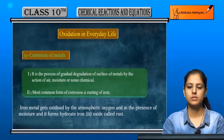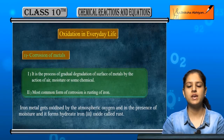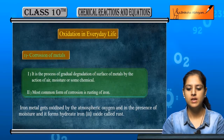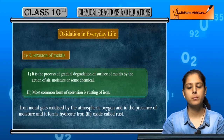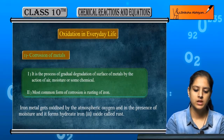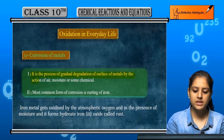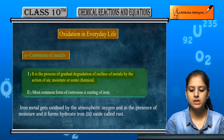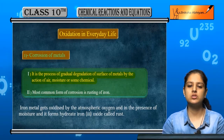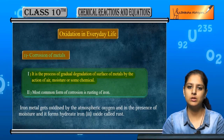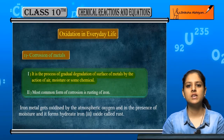Now the last topic is oxidation in everyday life — everyday life mein kaisi oxidation hoti hai, kin kin cheezon pe hoti hai. We will study two phenomena. First is corrosion of metals. Corrosion is the process of gradual degradation of the surface of metals by the action of air, moisture, or some chemical. Gradual degradation matlab dheere dheere jab kisi bhi metal ka surface kharaab ho jata hai, degrade ho jata hai — so we call it the process of corrosion.